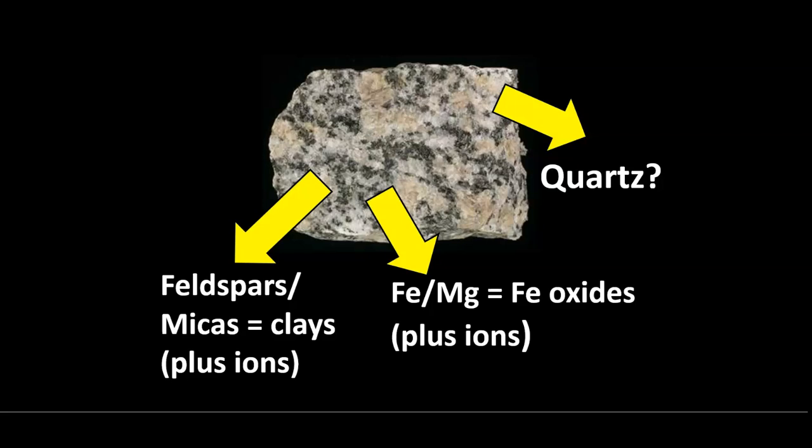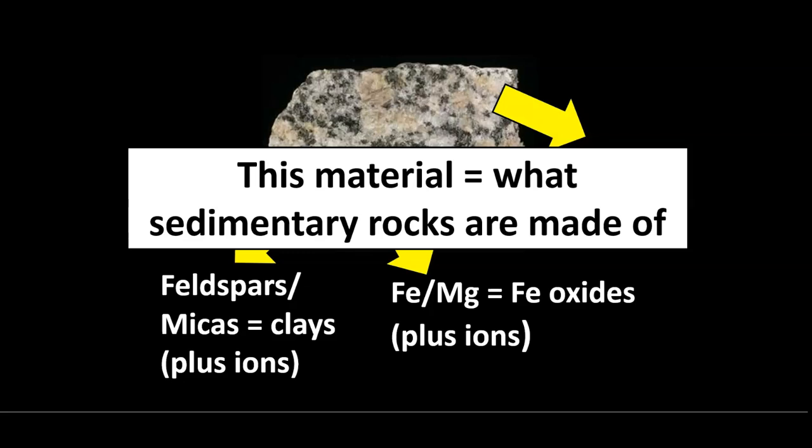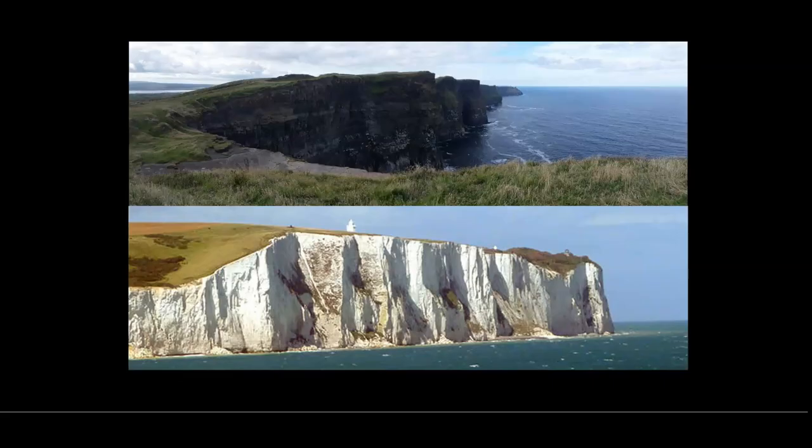Our quartz is just being quartz. The end product is going to be three things: residue — chunks of rock or minerals that are very resistant; new secondary minerals that are weathering byproducts; and material in solution. We can utilize all of that to make sedimentary rocks. The key distinction is between the physical material left behind — the residue and secondary minerals — and the material that is in solution.